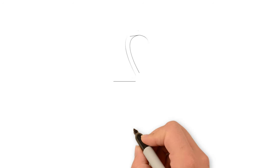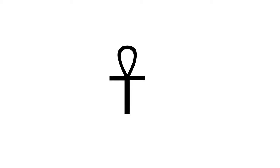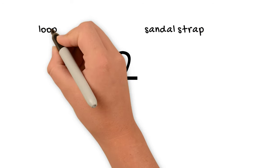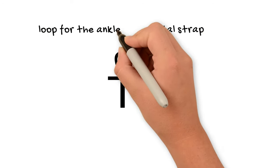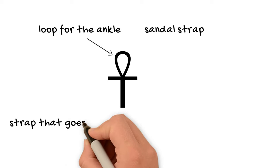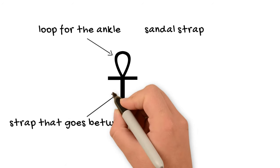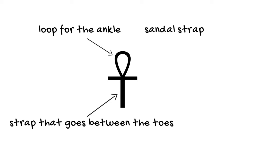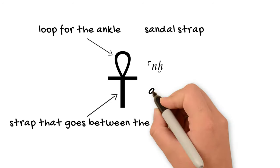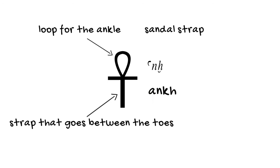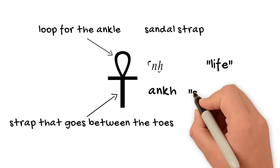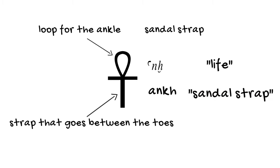So what is this one? Well, the most common answer you'll hear is that this actually pictures a sandal strap. The loop being the part that would go around the ankle, and the long string in the center going down would be the part that goes between the toes, kind of like on flip-flops, except with a little more structure. One good reason to think this may be correct is that the word ankh not only means life, but also can spell the word for sandal strap, which is also ankh in ancient Egyptian.